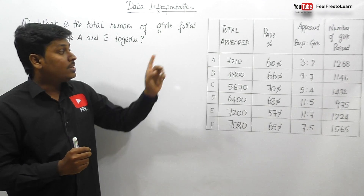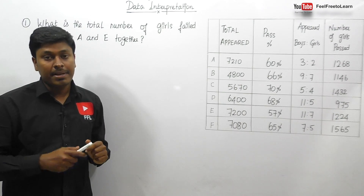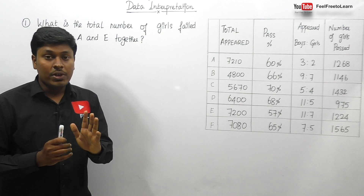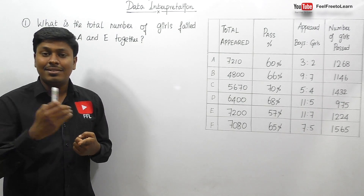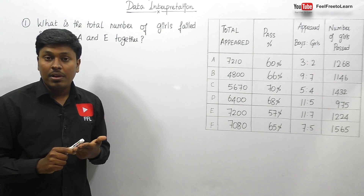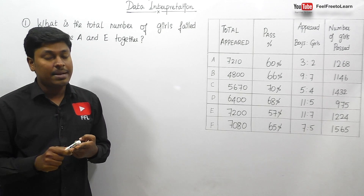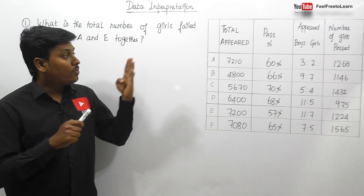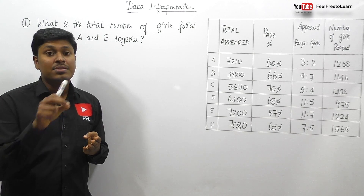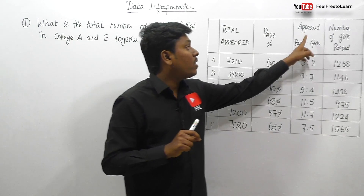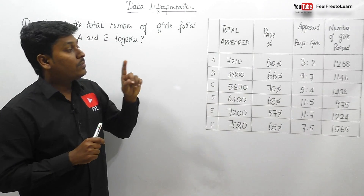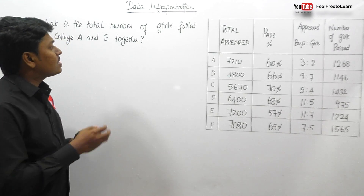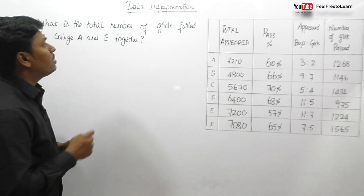The fifth column is the number of girls passed. So there are totally five columns: first column is colleges A to F, second column is total students appeared in each college, third column is pass percentage, fourth column is the ratio of boys and girls for appeared students, and the fifth column is number of girls passed. Let me move on to the various questions based on this chart.